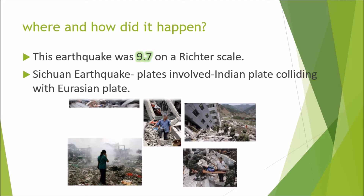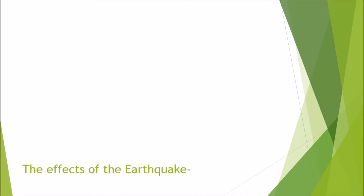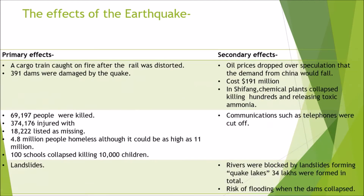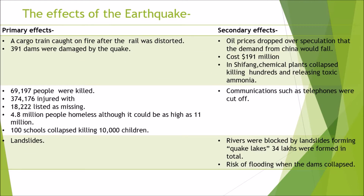Here we can see some pictures which show the effects. Now we're going to talk about the effects. There are two types of effects: primary and secondary. A cargo train caught on fire after the rail was distorted. 391 dams were damaged by the quake. 69,197 people were killed.